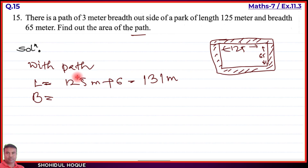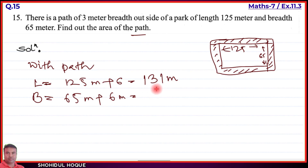The original breadth was 65 meter. The path adds 3 meter on each side, so the breadth increases by 3 + 3 = 6 meters. Therefore, the breadth of the outer rectangle is 65 + 6 = 71 meter.